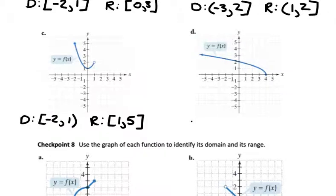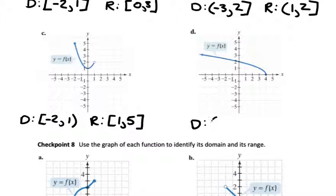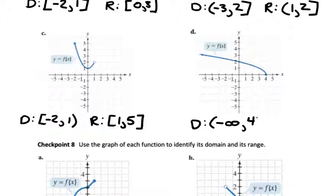For part D, this one's a little different because instead of having an endpoint, there's an arrow on one end, meaning the graph keeps on going forever. There isn't a smallest possible value because it's going to keep on going in the negative direction, so this is where we use negative infinity — and we always use a parenthesis with negative infinity. So the domain is: parenthesis, negative infinity, comma, 4, square bracket — since 4 has a solid circle.